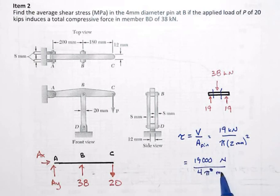Newton over millimeters squared is mega pascal and 19,000 divided by 4 pi will be approximately 1511 mega pascals.